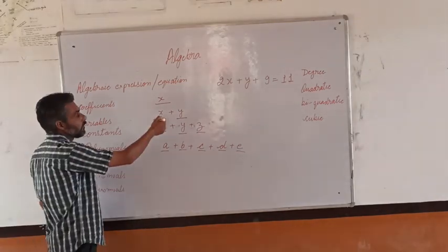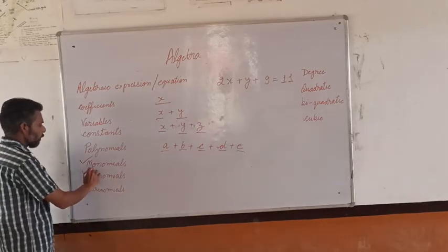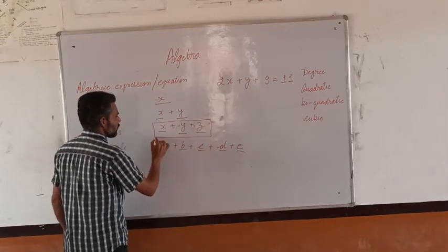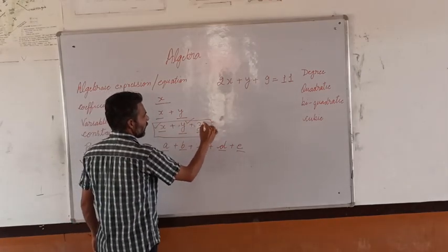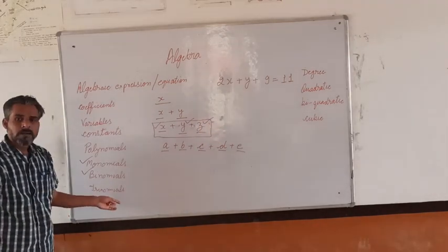Now here we are having two variables and two terms. So we can call it a binomial. In this we are having three terms: X, Y, and Z, so it is called a trinomial.